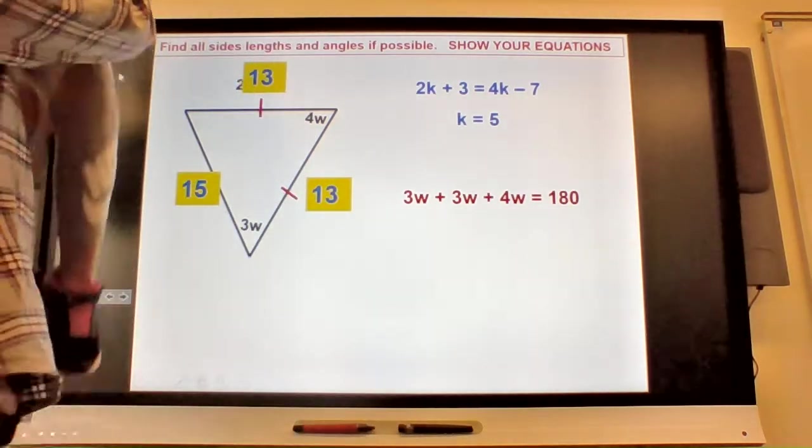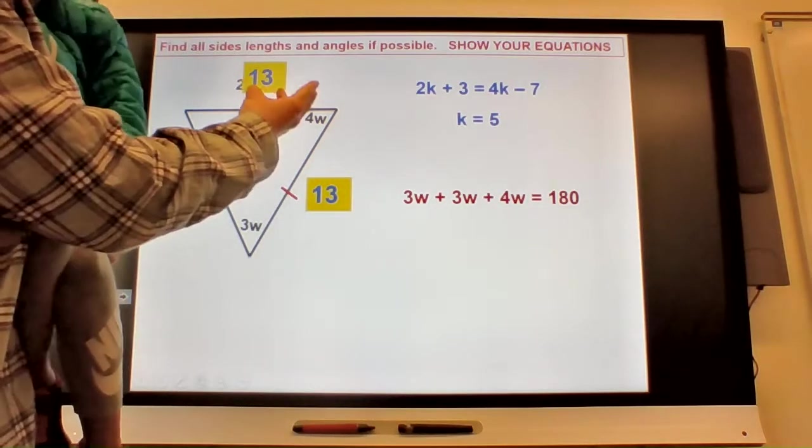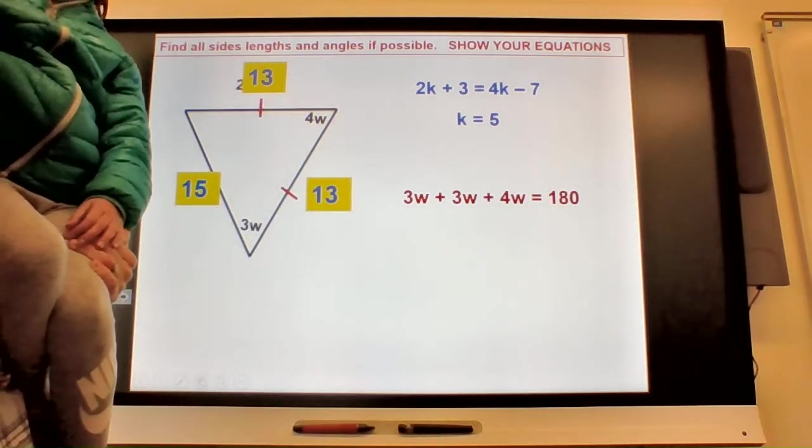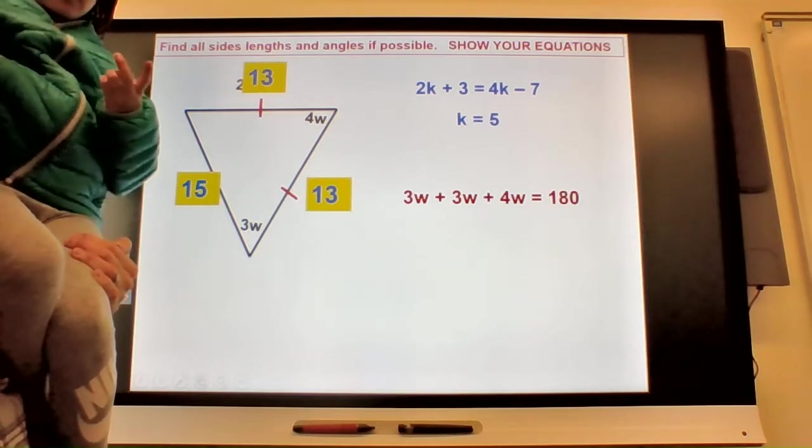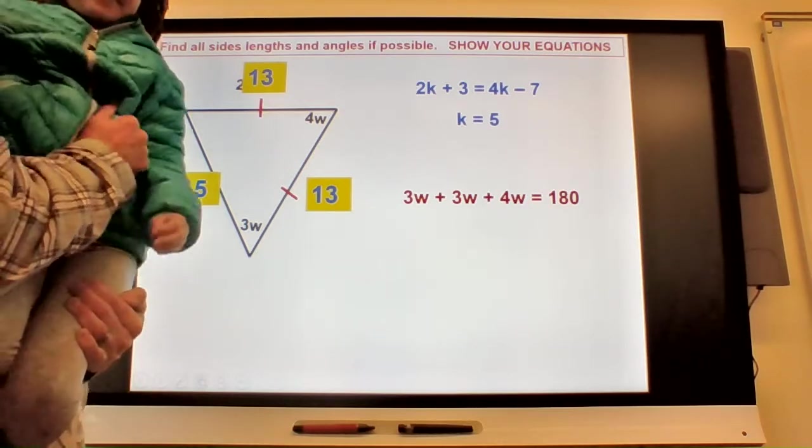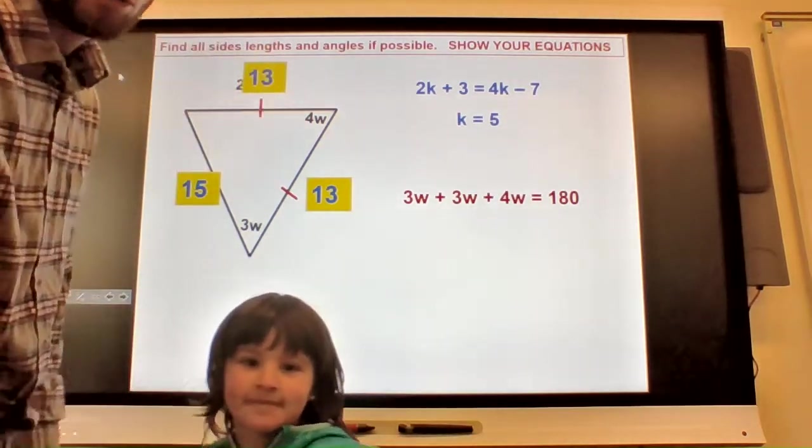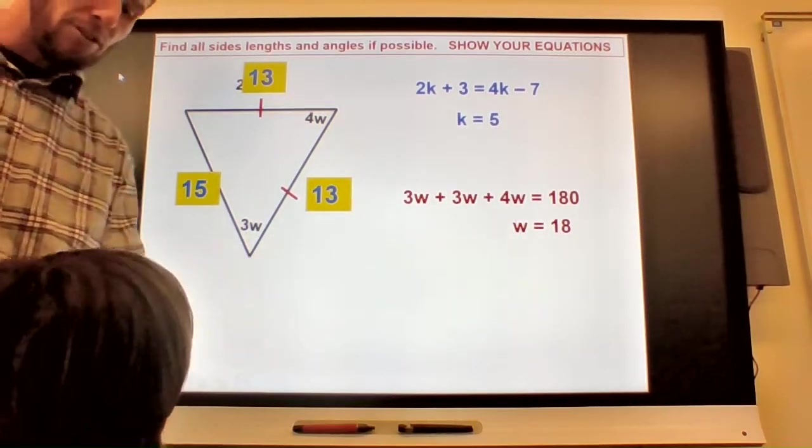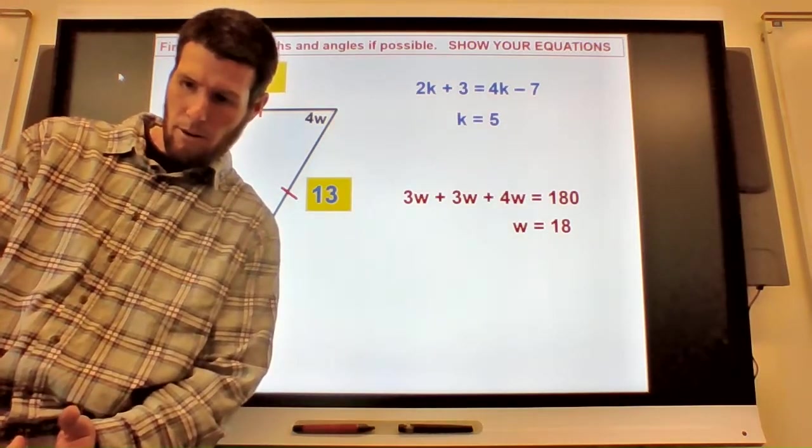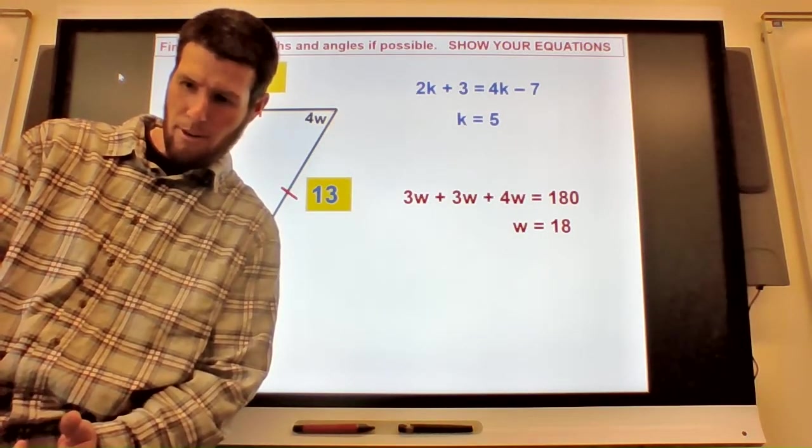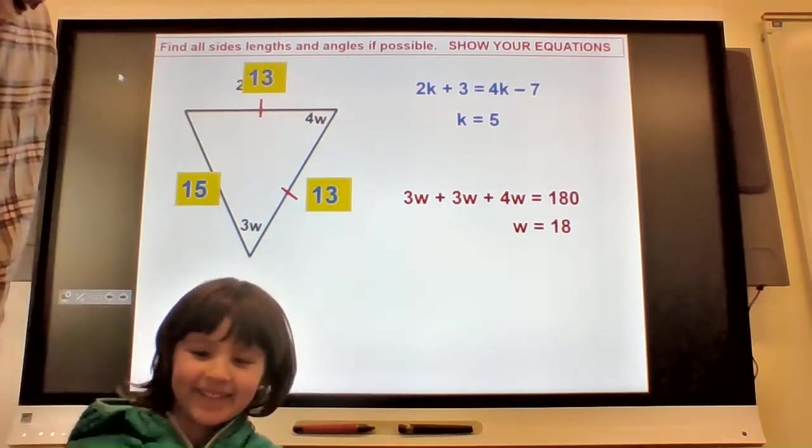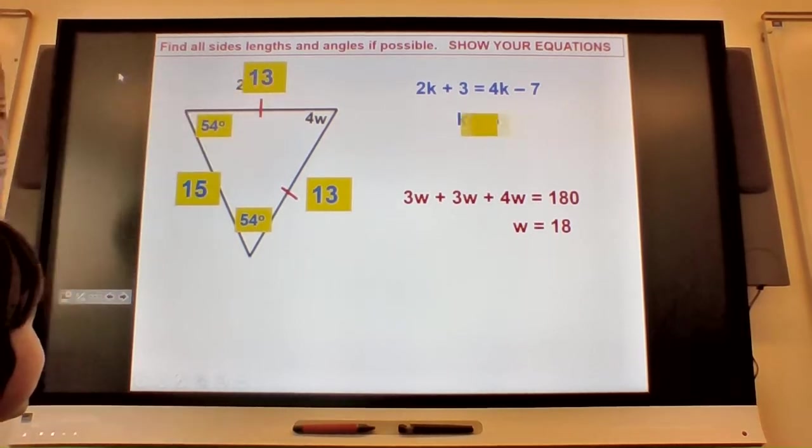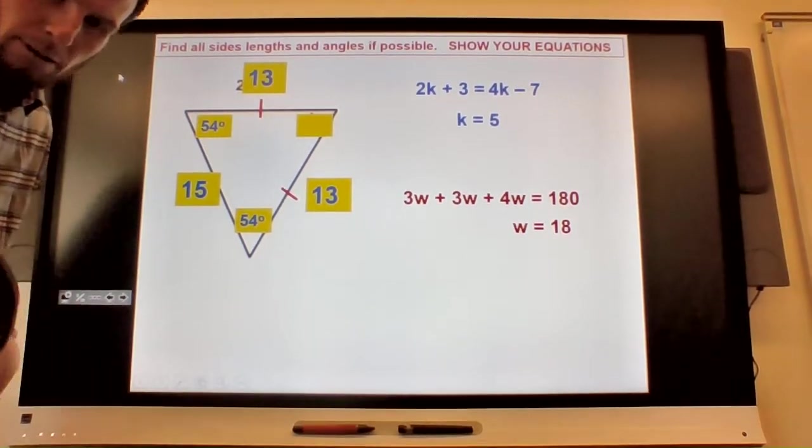3w, 3w, 4w has to add up. So what's 4w plus 3w and 3w? What's 3 plus 3 plus 4? 10. 10, see that? You got it. Well done. She's on her way. And then of course you divide, you get 18 for w. Plug it back in, three times 18...